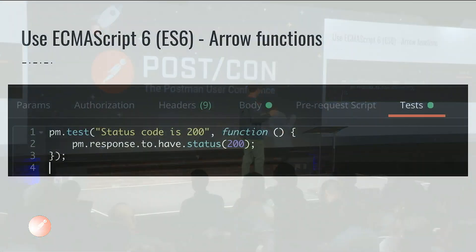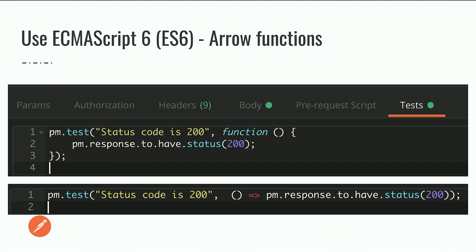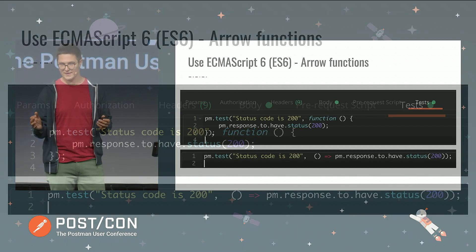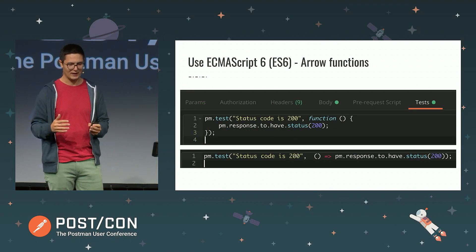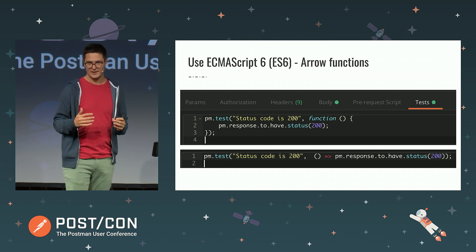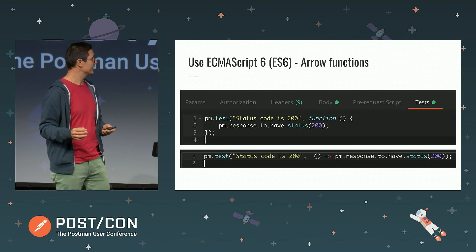Here's a simple example — a test you can generate with Postman in two clicks. There's absolutely nothing wrong with it, but you can also write it using ES6 arrow functions. You can leave the function keyword behind, use an arrow function, and even remove the curly braces entirely to have a single line. Of course, if you need multiple assertions you can introduce the curly braces, but for a single assertion you can write it much simpler this way.